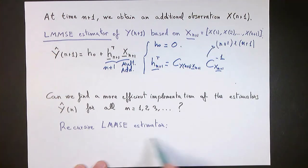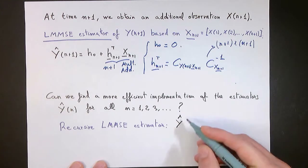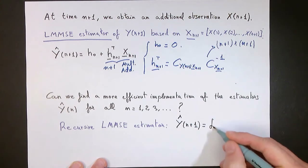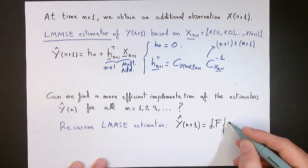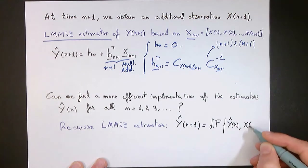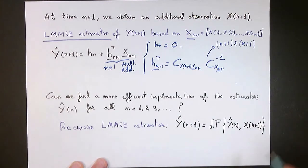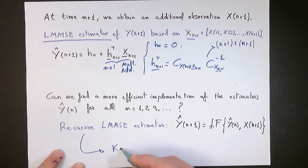This recursive implementation is going to be such that we want to obtain the estimate of the process y at time n plus 1 as simply a linear function — a linear operator — of the previous estimate of y at time n and the new observation of the process x obtained at time n plus 1. We will see that this recursive estimation is precisely what the Kalman filter implements.